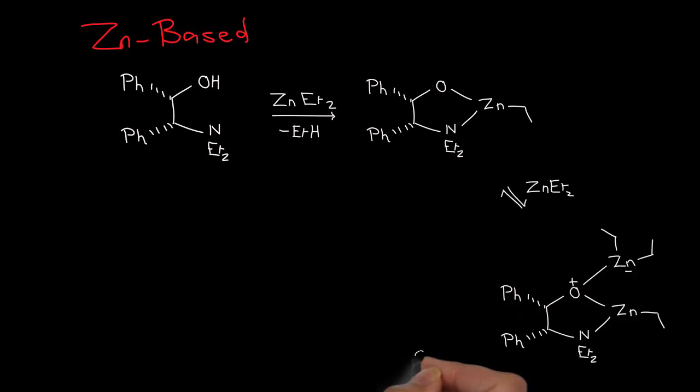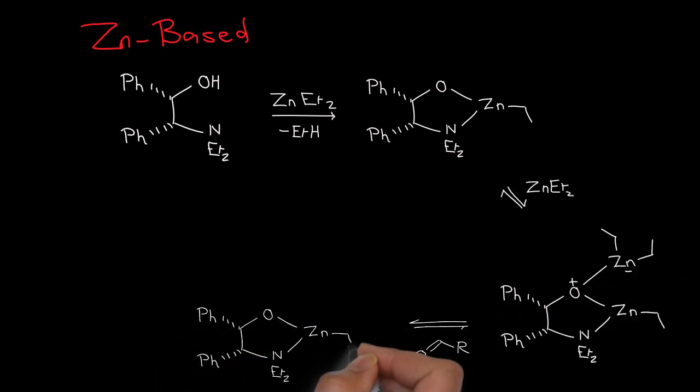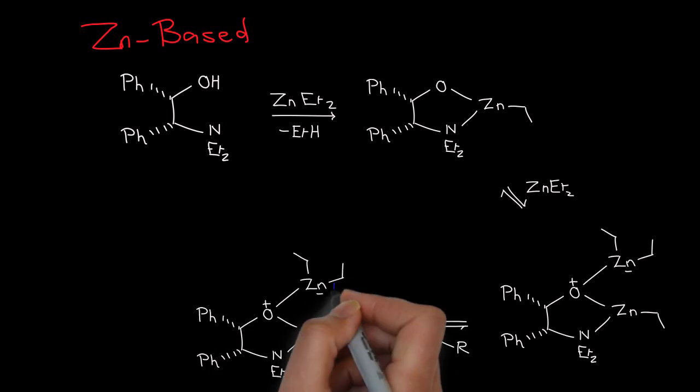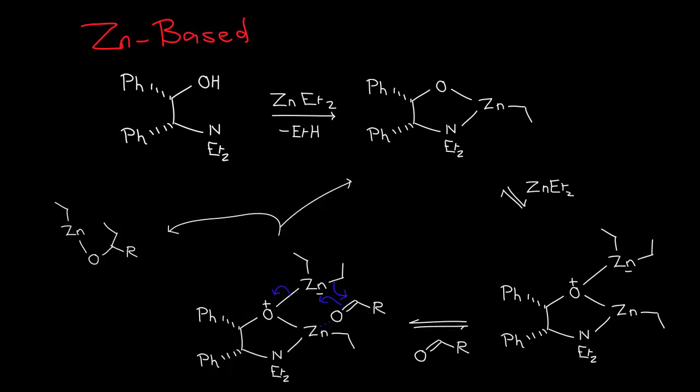The aldehyde positions itself between this nucleophilic center and the Lewis acidic zinc in the ring, and the alkyl group is delivered preferentially to one enantioface.